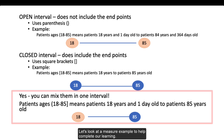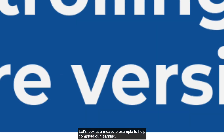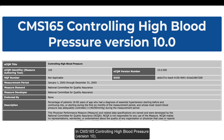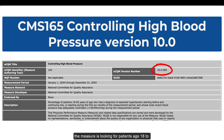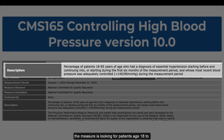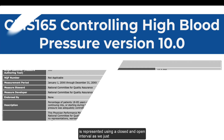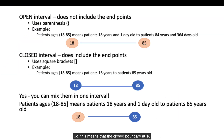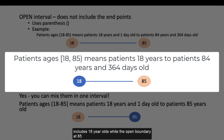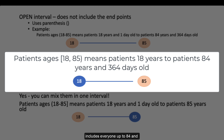Let's look at a measure example to help complete our learning. In CMS165, Controlling High Blood Pressure, version 10, the measure is looking for patients age 18 to 85. In the measure logic, we can see that this interval is represented using a closed and open interval, as we just discussed. So this means that the closed boundary at 18 includes 18-year-olds, while the open boundary at 85 includes everyone up to 84 and 364 days old.